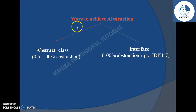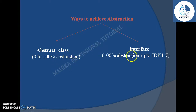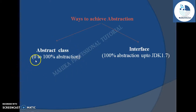In Java there are two ways to achieve abstraction: one is using an abstract class, and the second is using an interface. If we use an abstract class, the degree of abstraction that can be achieved is zero to one hundred percent. In case of interfaces, up to JDK 1.7 one hundred percent abstraction was possible, but from JDK 1.8 onwards concrete methods are also permitted in interfaces, which we will discuss later in subsequent tutorials.